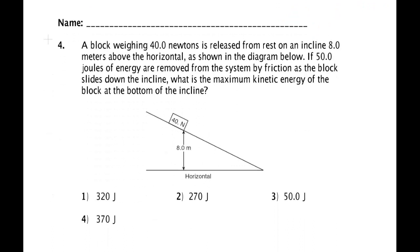Going to the next problem. This deals with the case of a block on an incline plane. It says a block weighing 40 Newtons is released from rest on an incline 8 meters above the horizontal. 50 joules of energy are removed from the system by friction as the block slides down the incline. So what's the maximum kinetic energy of the block at the bottom?